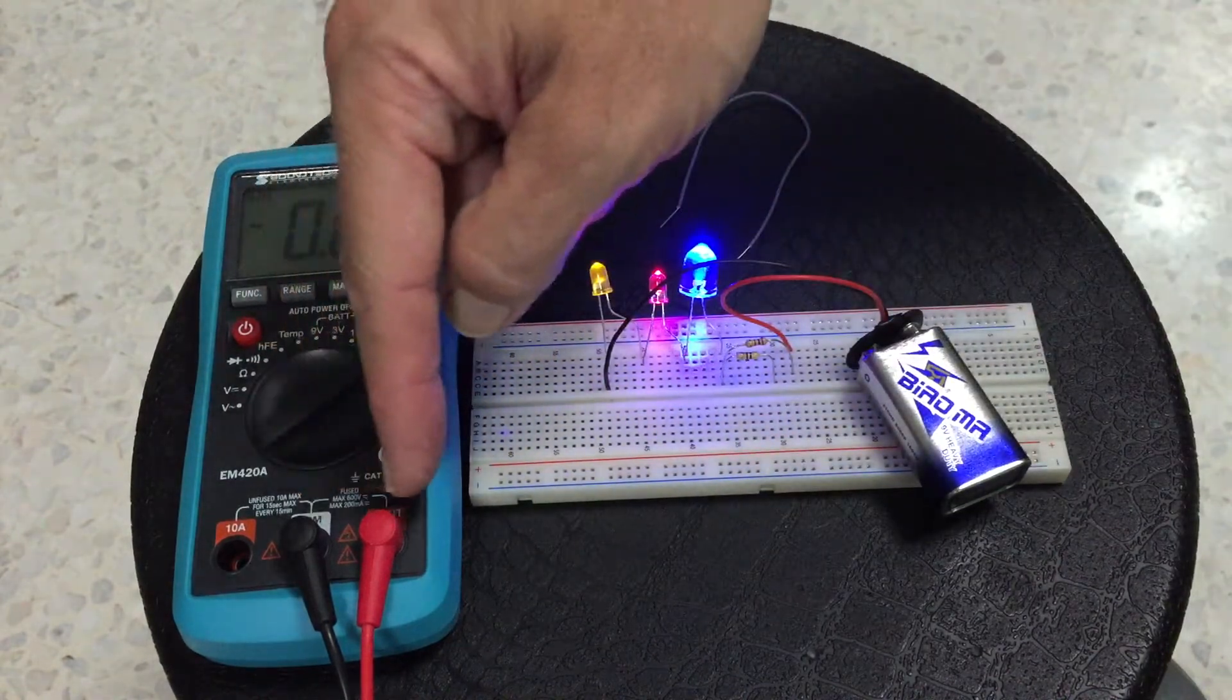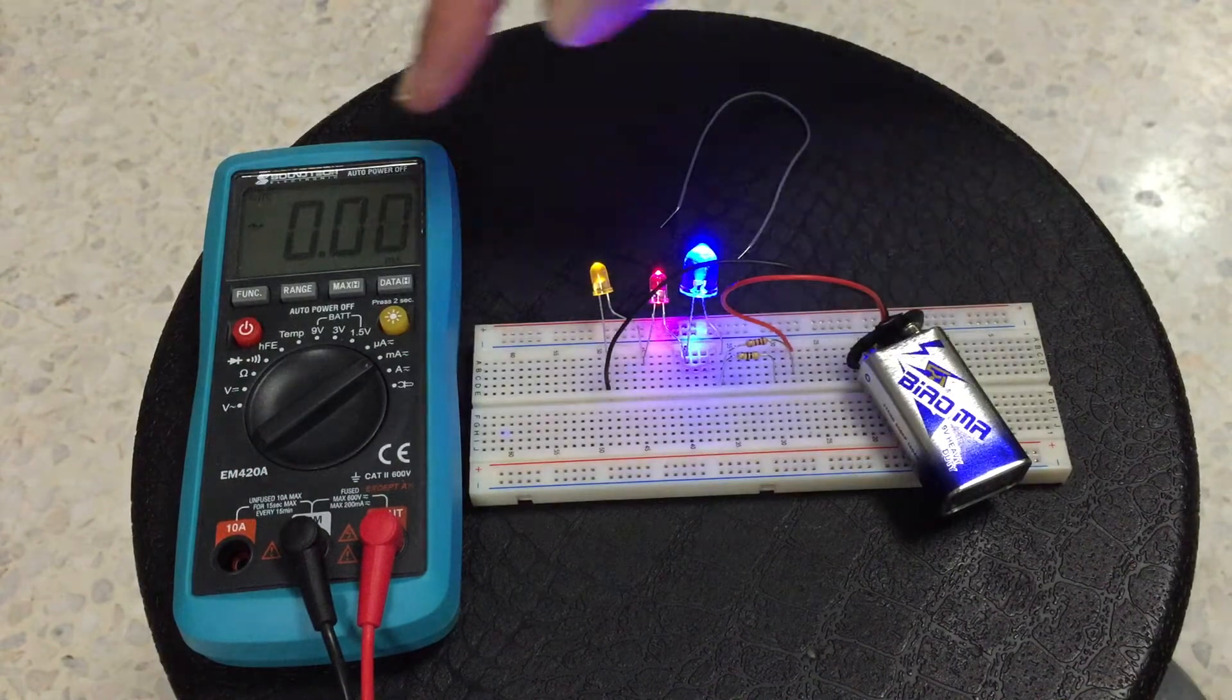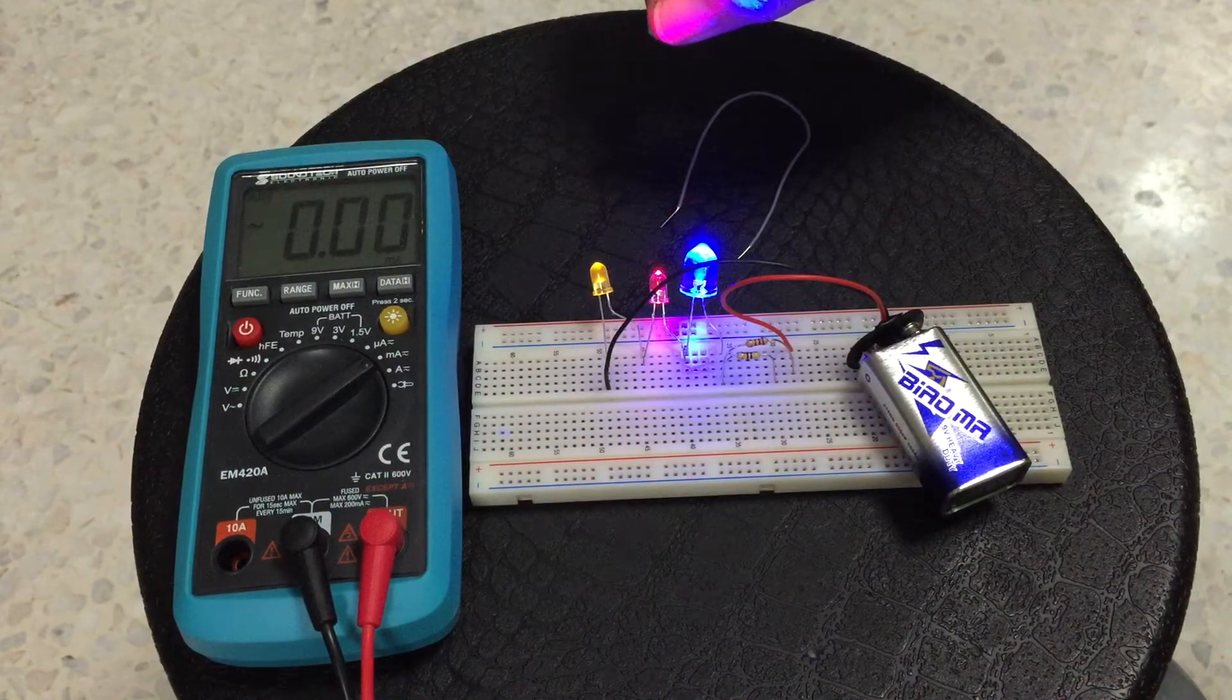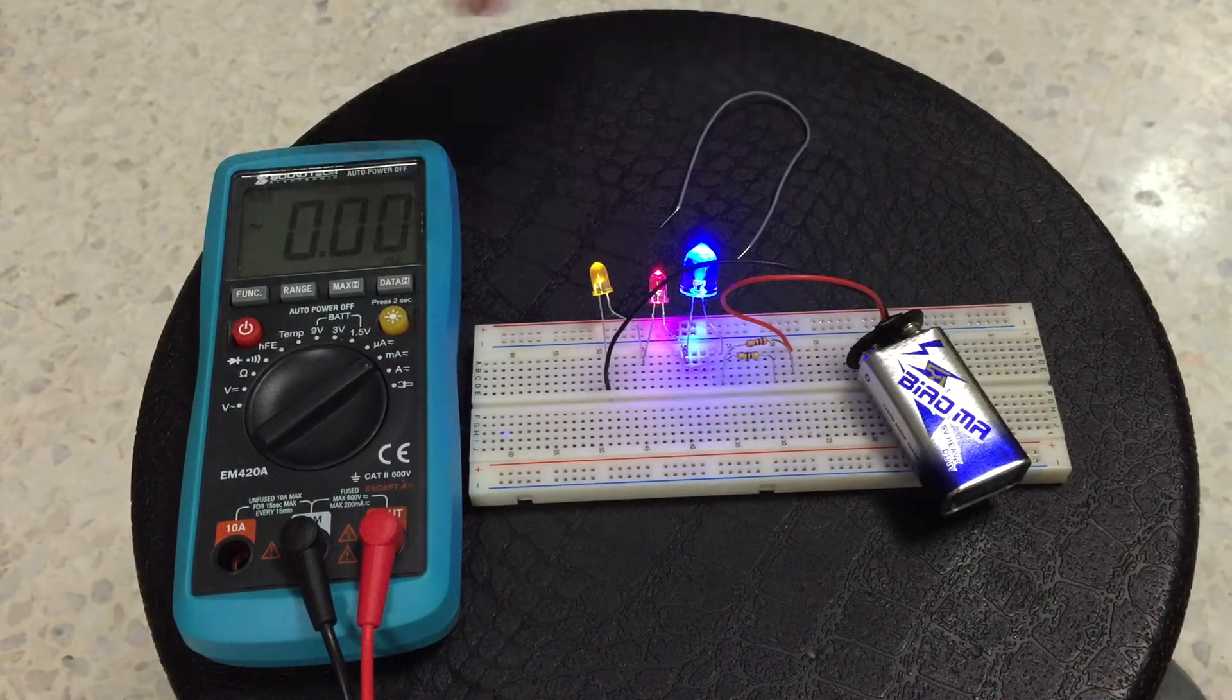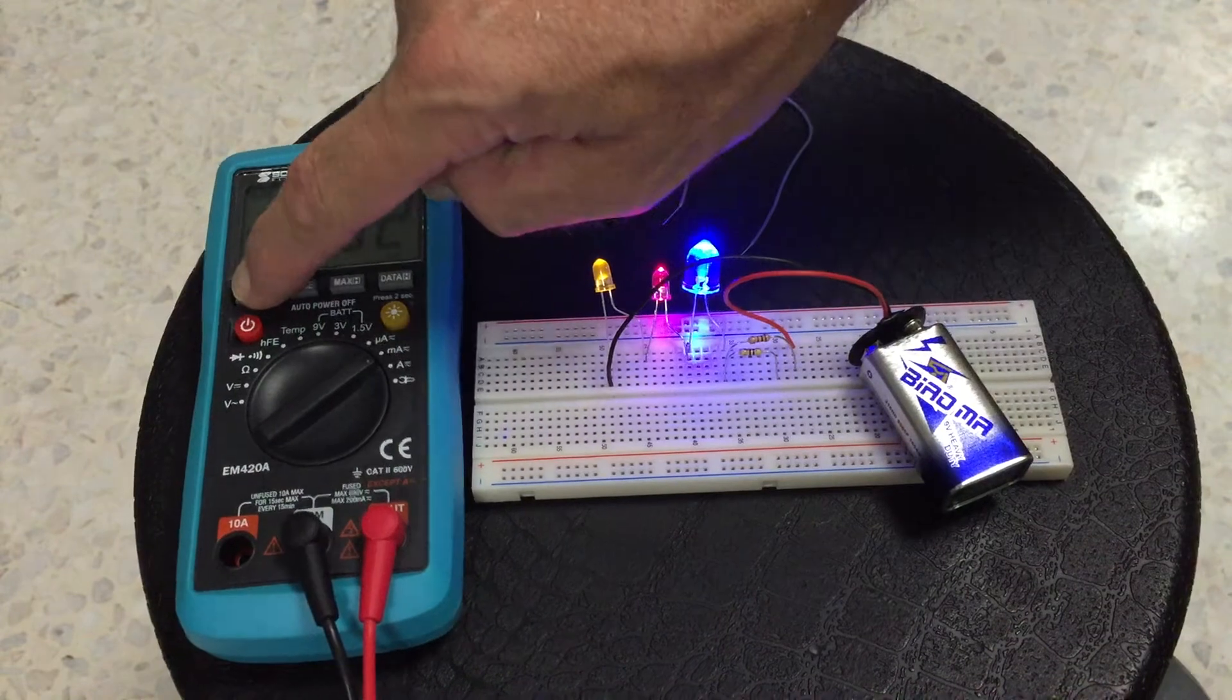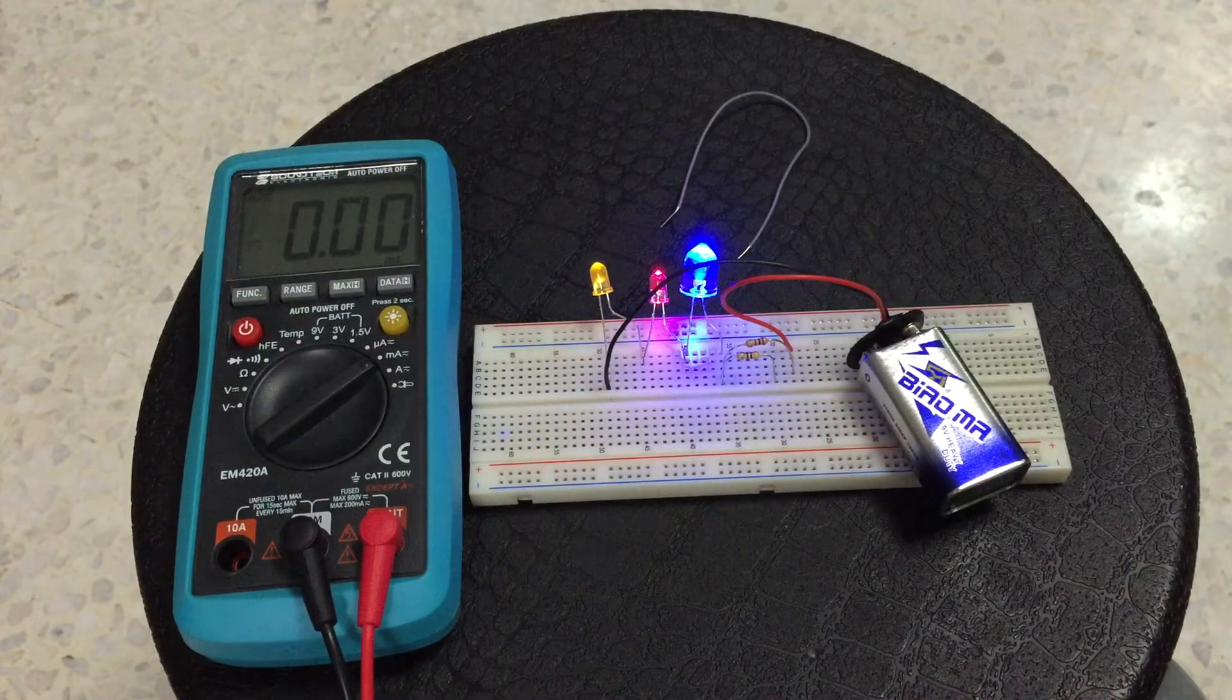For this meter we don't have to change the probes around and we have to change the mode because at the moment there's a squiggle here which means it's trying to measure AC current. That's current going this way, that way, both ways. We want to make it DC only one way. We press the function button and now we have a line and that means it's DC.